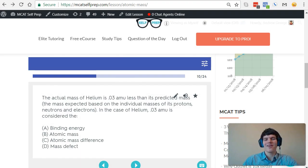Okay, let's take another look at the question stem. The question stem says, the actual mass of helium is 0.03 amu less than its predicted mass, the mass expected based on the individual masses of its protons, neutrons, and electrons. In the case of helium, 0.03 amu is considered the?